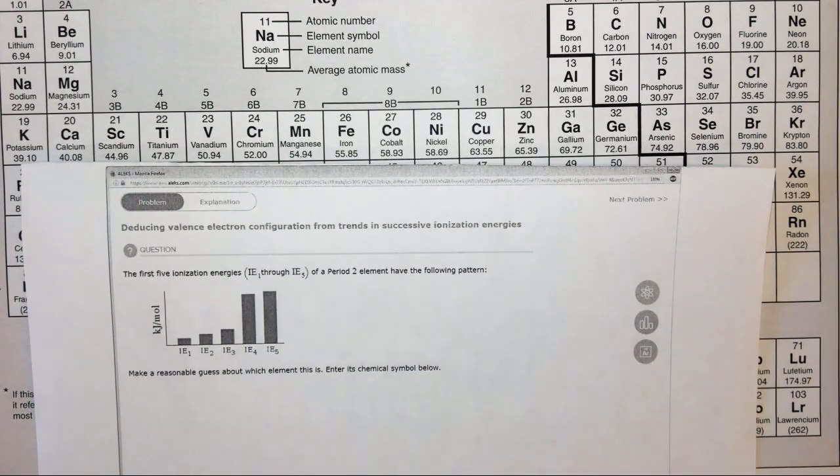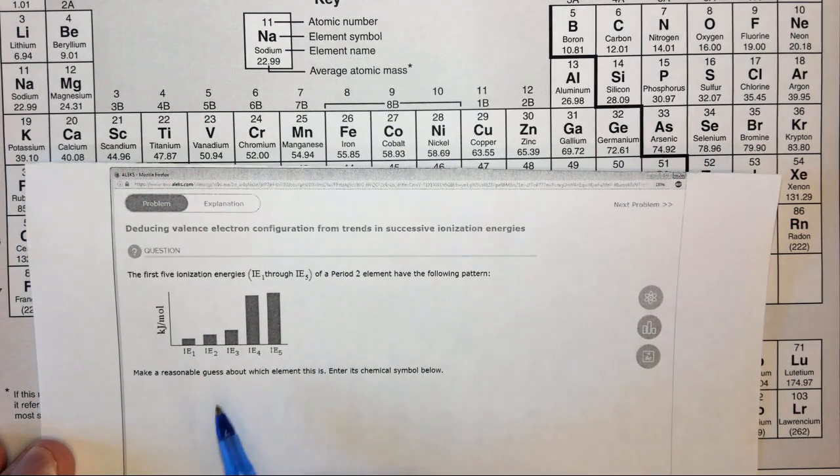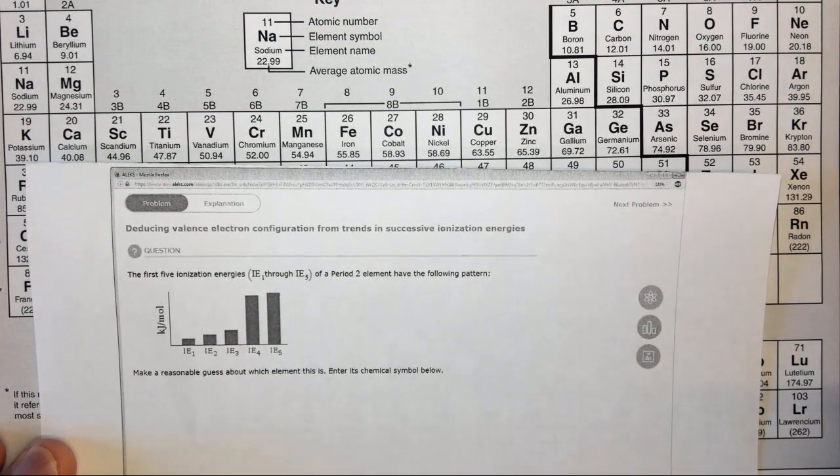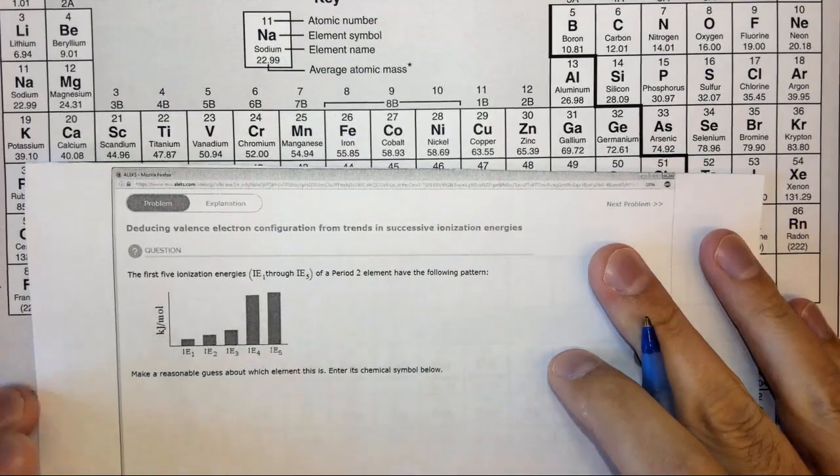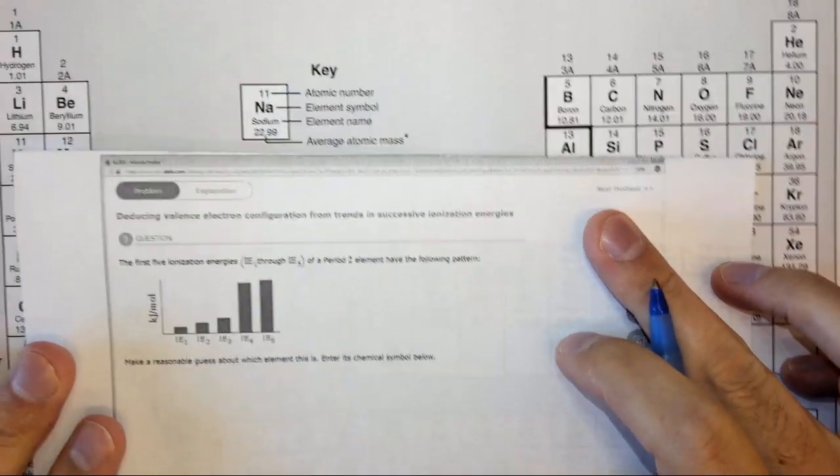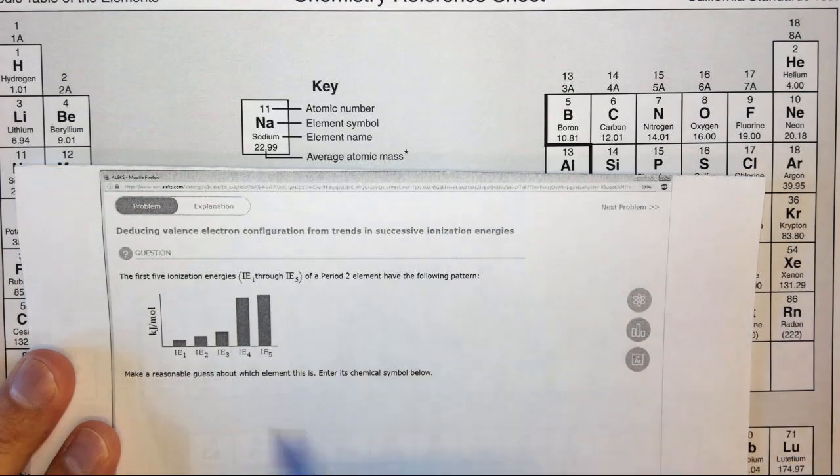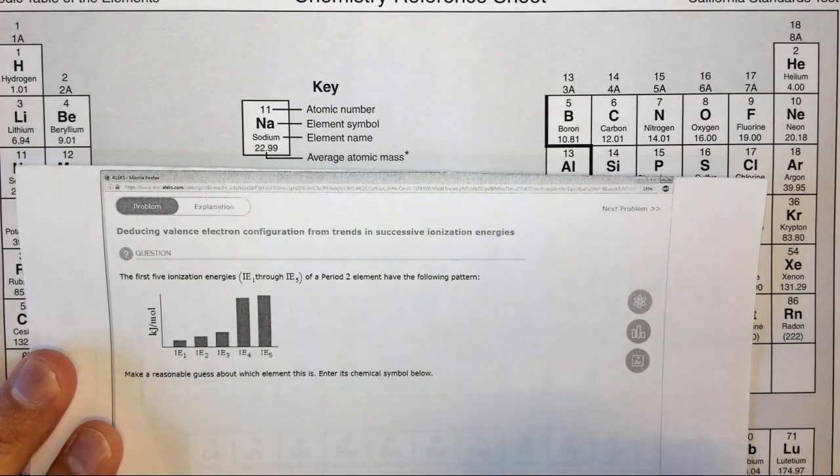In this question we're given the first five ionization energies of a period two element, and we're asked to figure out which element it is based on its chemical symbol. So here we're looking at one of these period two elements based on its ionization energies.